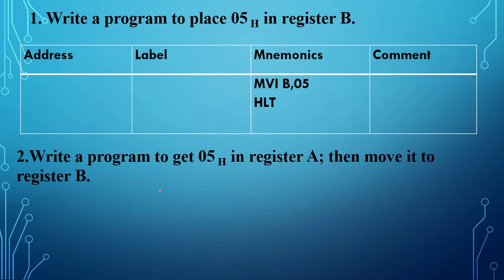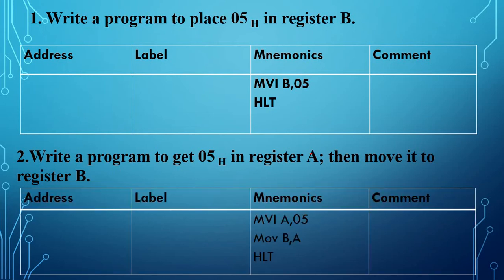Example 2: Write a program to get 0FFh in register A, then move it to register B. First, MVI A, 05 immediately moves 05 to the accumulator. Then MOV B, A moves the accumulator content to B register. After execution of both instructions, the A register value is 05 and the B register value is 05. Then stop the program.